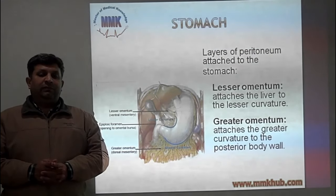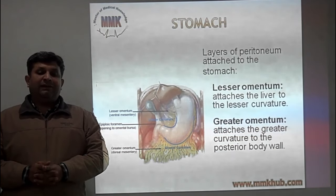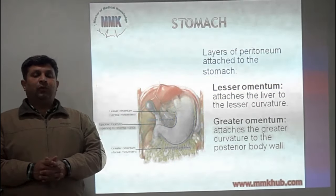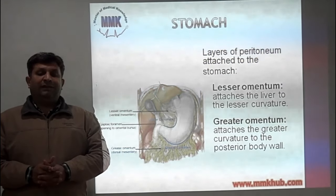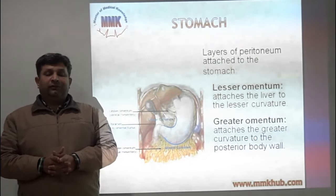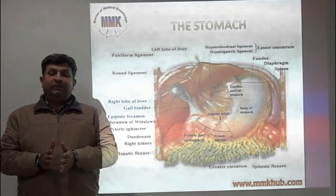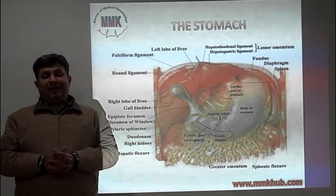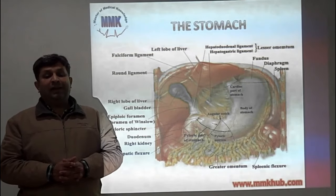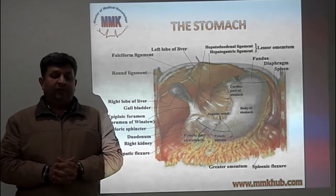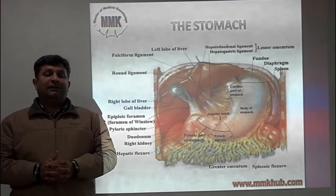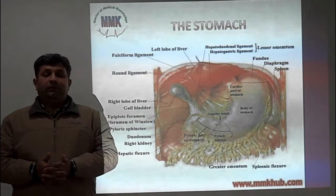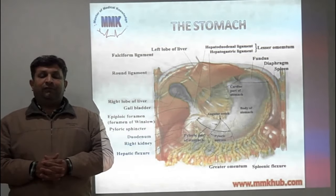There are two layers of the peritoneum which form the greater and lesser omentum and attach the stomach to the surrounding structures. These peritoneal folds contain vessels, nerves, and lymphatics traveling to and from the stomach. The lesser omentum attaches the stomach to the liver, and behind the lesser omentum the sac is called the lesser sac. The opening into the lesser sac from the greater sac is the epiploic foramen, or foramen of Winslow. The greater omentum attaches the greater curvature of the stomach to the transverse colon and carries lymphatics, vessels, and nerves.